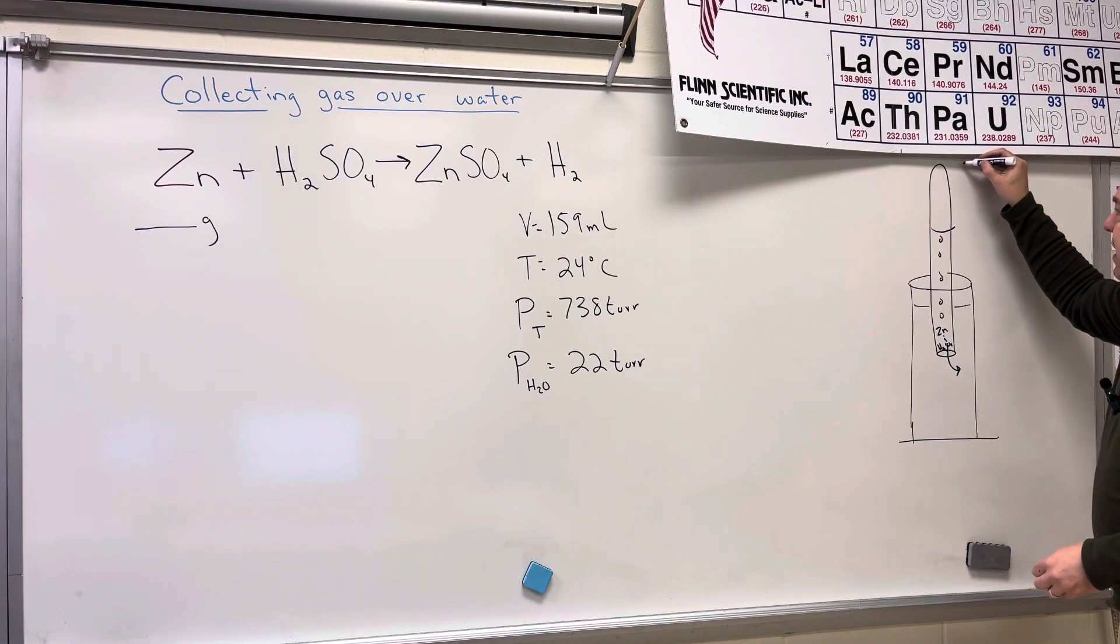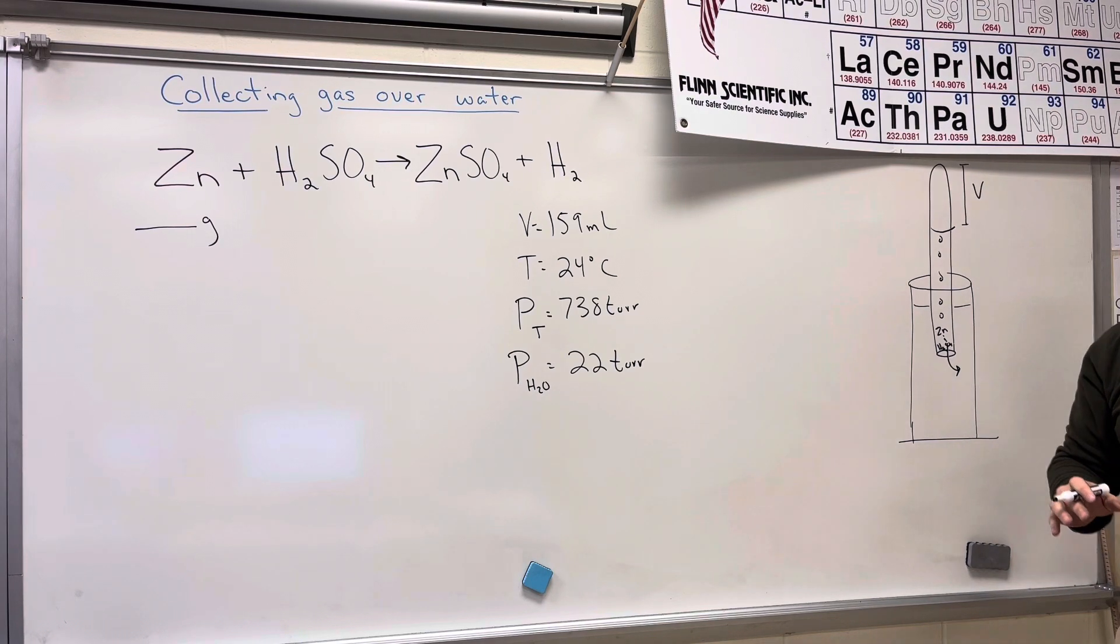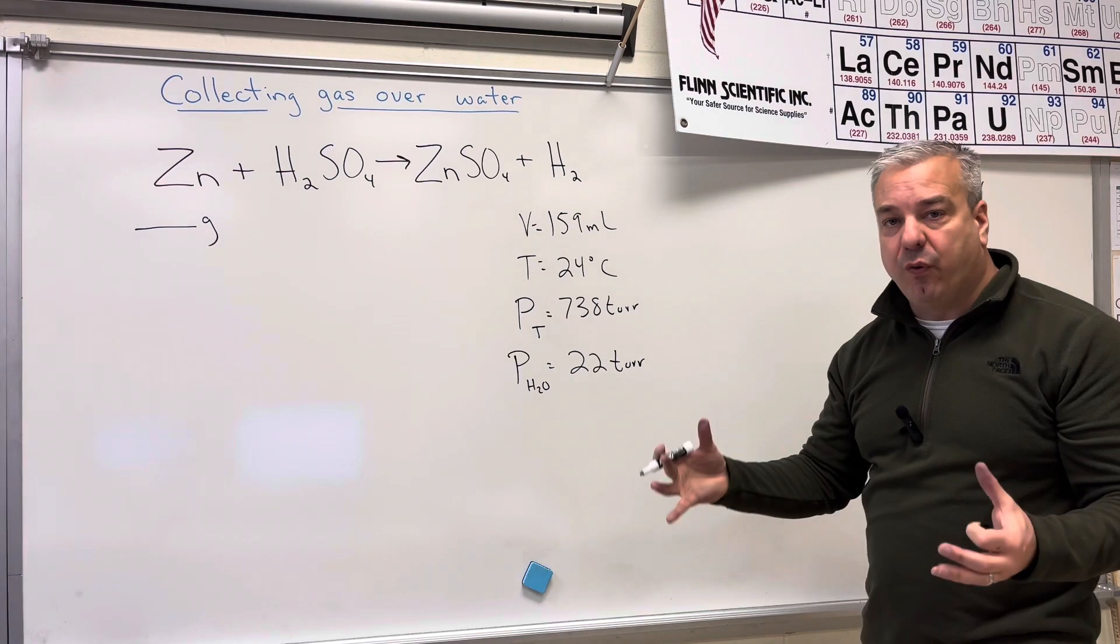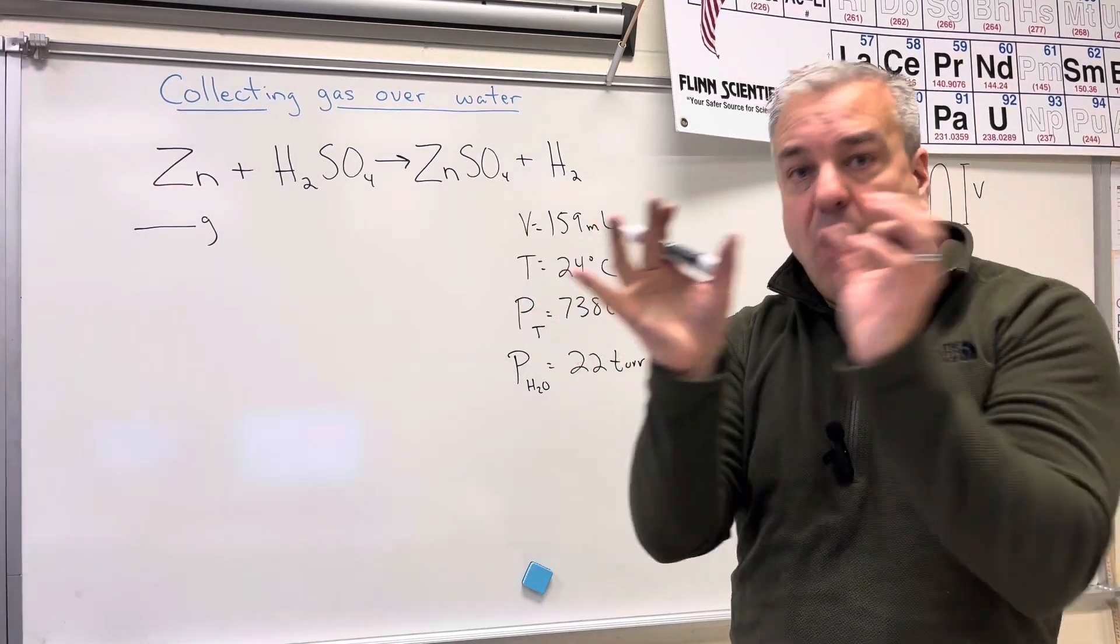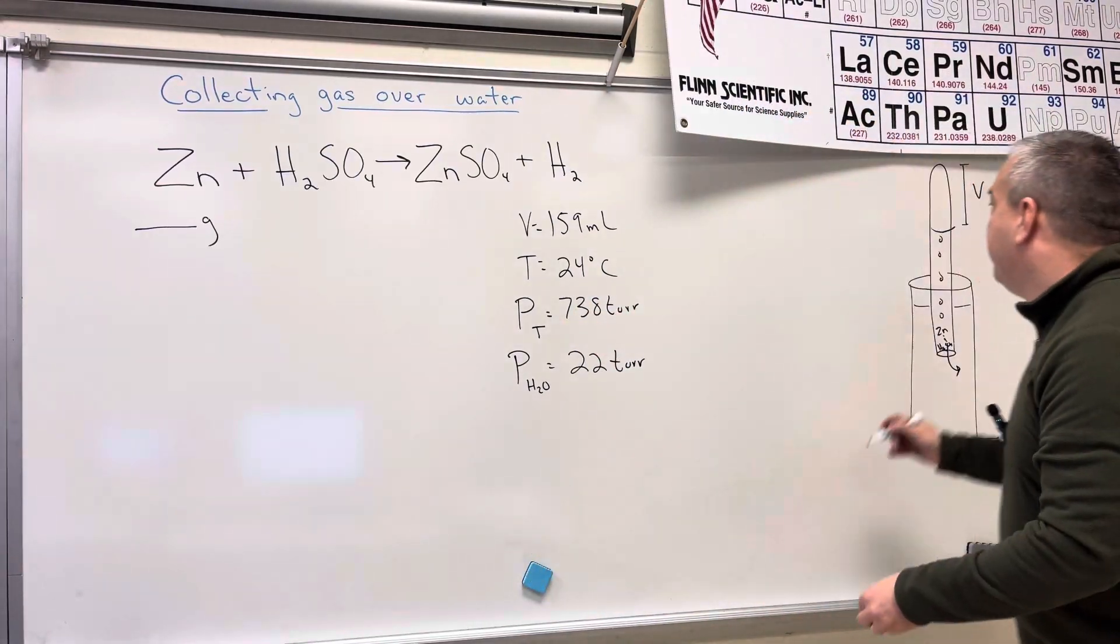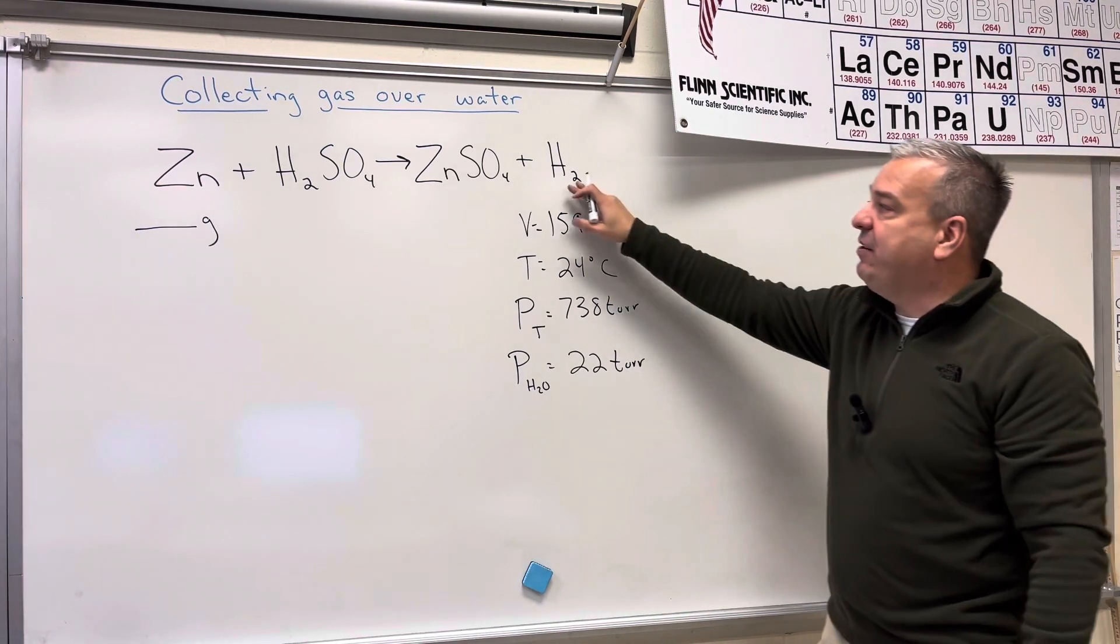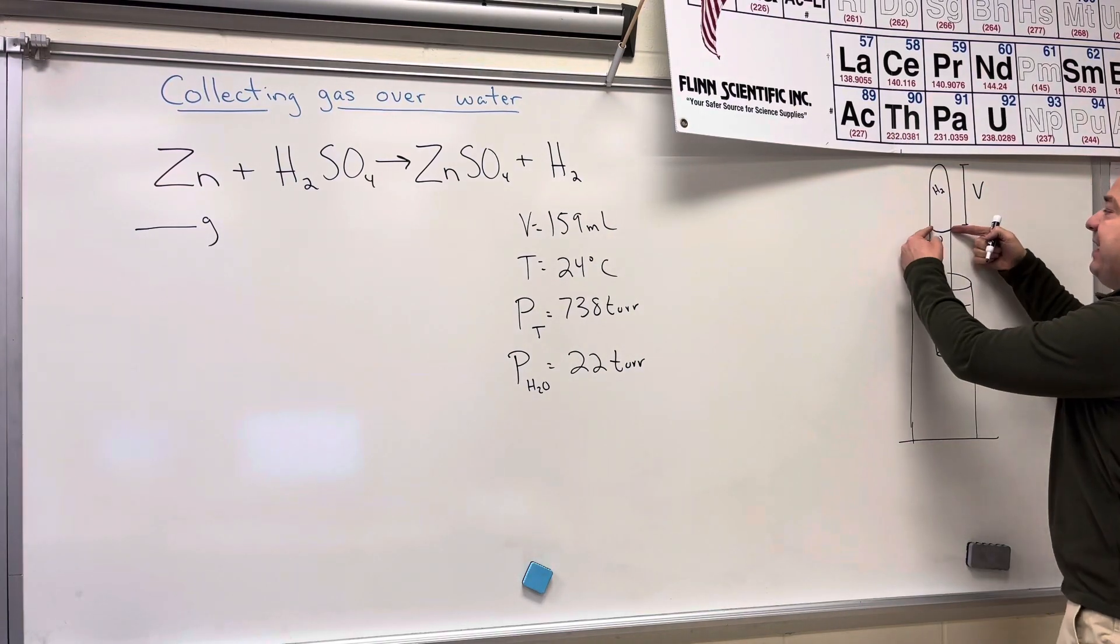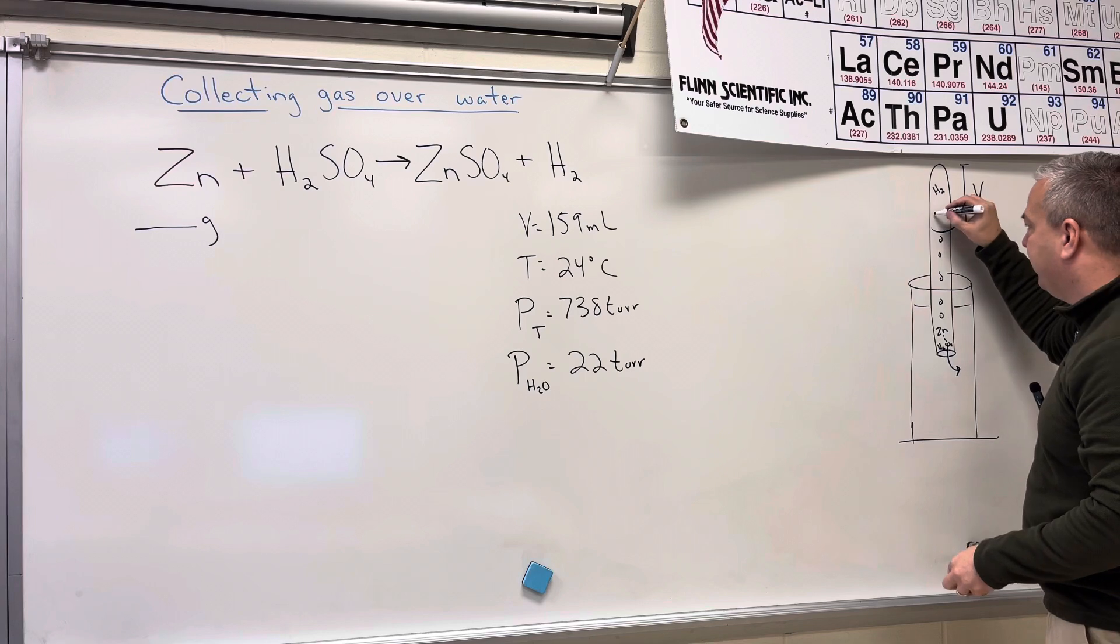And so we can measure the volume that's collected in here. However, there's a big issue when you collect a gas over water. And this is a piece of information that a lot of students overlook. So this is a very common mistake when doing this type of problem is not realizing that there's two gases here.